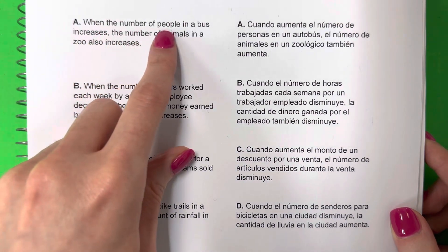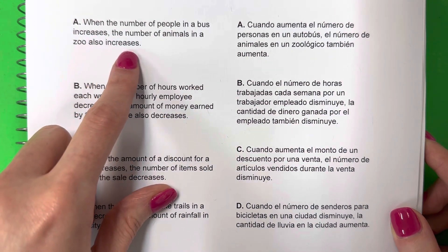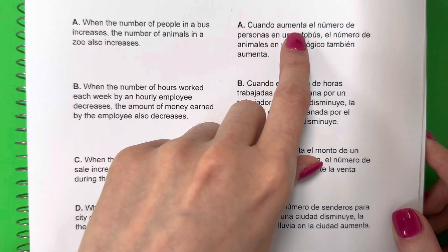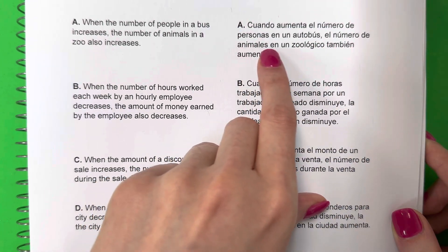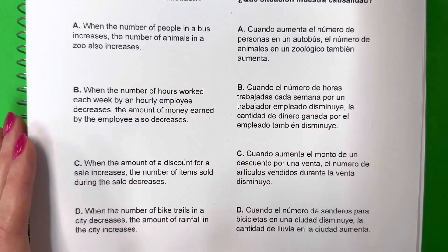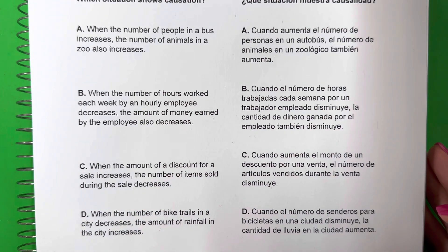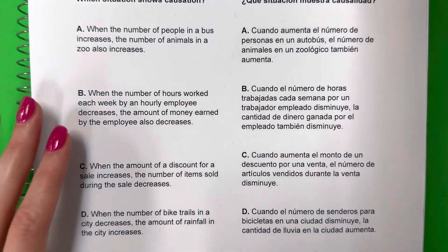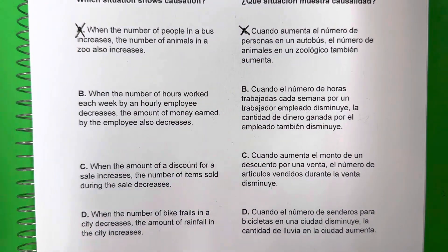Answer choice A: When the number of people in a bus increases, the number of animals in a zoo also increases. Cuando aumenta el número de personas en un autobús, el número de animales en un zoológico también aumenta. That does not make sense. I don't think that's true — no creo que esto es cierto. If there are more people on the bus, that has nothing to do with the zoo. Si hay más personas en un autobús, no tienen nada con el zoológico. And this is just a normal bus, not a bus to the zoo.